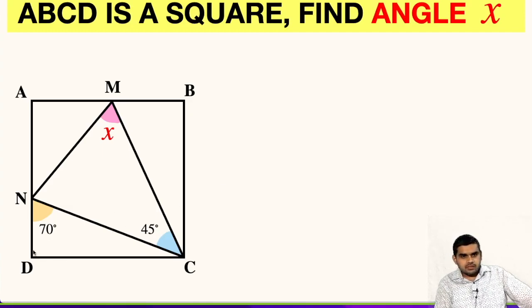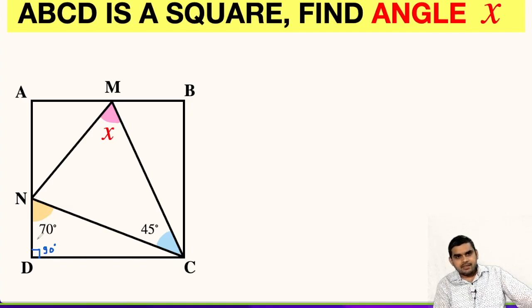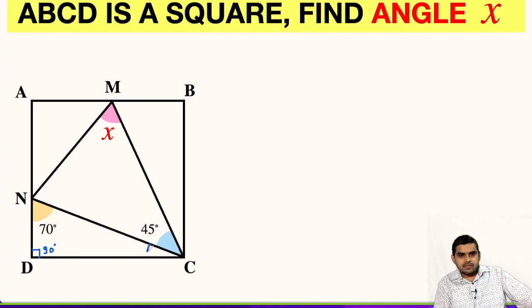First of all, we see that angle D will be 90 degrees. Now focus on triangle NDC. In triangle NDC, the sum of all interior angles will be 180 degrees. So if one angle is 90 and another is 70, then the third one will be 20 degrees.